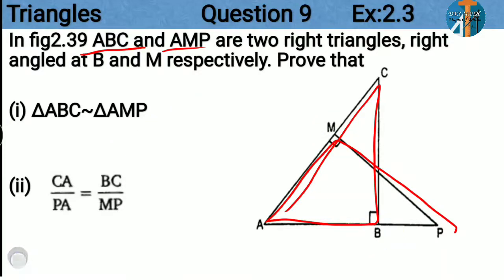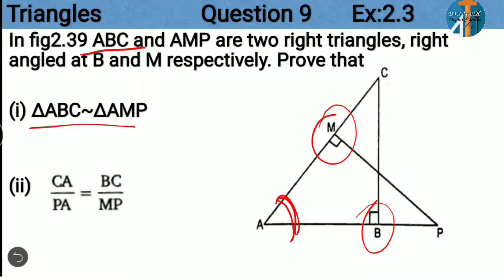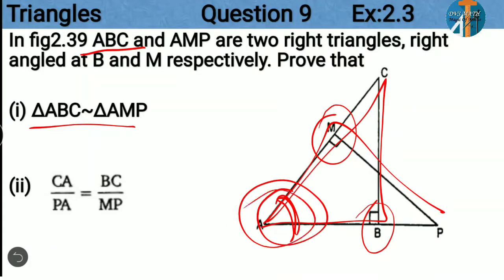As you all know, whenever they give triangles to prove, consider those same triangles. In triangles ABC and AMP, one angle — angle M and angle B — is 90 degrees, so one angle is equal. Then in both triangles, angle A is common. So one angle is 90 degrees and angle A is common — you have two equal angles.